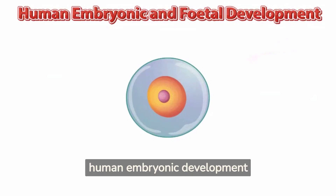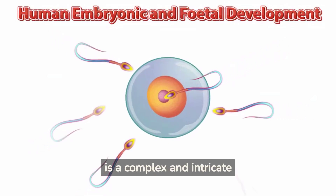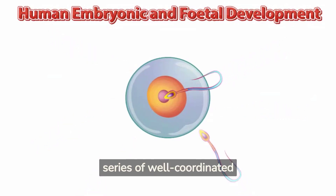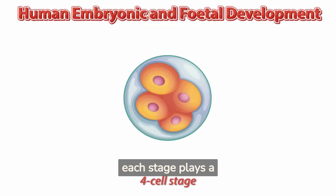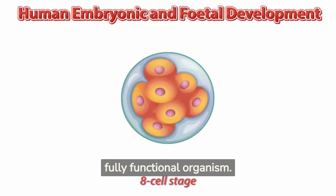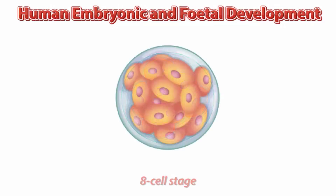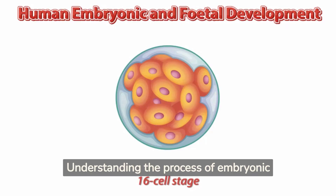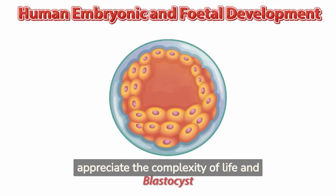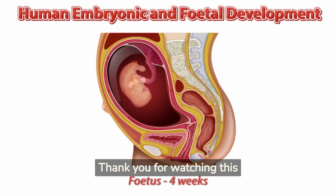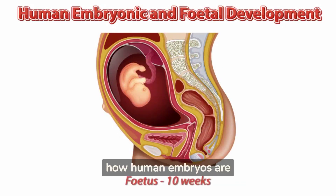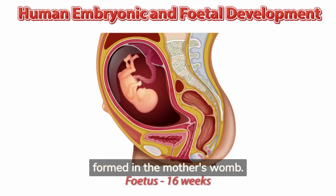Conclusion. In conclusion, human embryonic development is a complex and intricate process that involves a series of well-coordinated events. From fertilization to implantation and organogenesis, each stage plays a critical role in the formation of a fully functional organism. Understanding the process of embryonic development can help us appreciate the complexity of life and the remarkable abilities of the human body. Thank you for watching this scientific presentation on how human embryos are formed in the mother's womb.